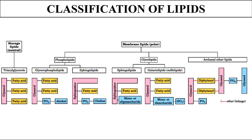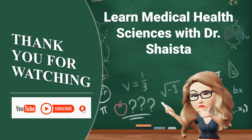That was all about the classification of lipids. To summarize: simple lipids include triglycerides and waxes; complex lipids include phospholipids, glycolipids, and lipoproteins. Phospholipids are further divided into glycerophospholipids and sphingophospholipids based on the alcohol attached. Glycolipids are divided into sphingolipids and galactolipids based on the alcohol attached — sphingosine and glycerol respectively. If you were able to understand, please like and share.